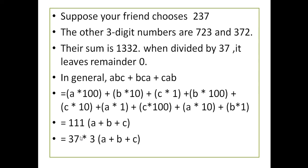In general form, the three numbers are abc, bca, and cab. Expanding and adding all three gives 111×(a+b+c). Since 111 equals 37×3, the sum is always a multiple of 37, so dividing by 37 always leaves remainder 0.